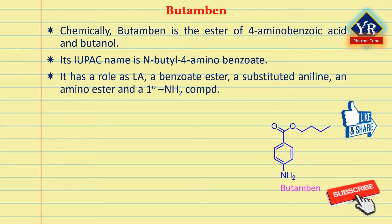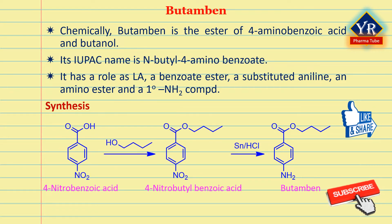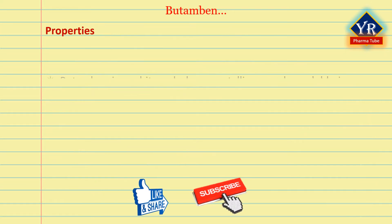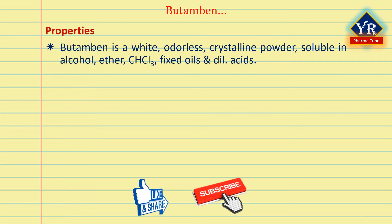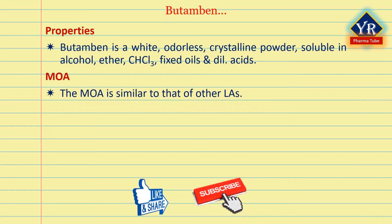Butamben may be synthesized from 4-nitrobenzoic acid, which is esterified with n-butanol to form 4-nitrobutyl benzoate. The nitro group of this compound is then reduced to an amino group using tin and hydrochloric acid to give butamben. Butamben is a white odorless crystalline powder that is mildly soluble in water and soluble in alcohol, ether, chloroform, fixed oils, and dilute acids. It slowly hydrolyzes when boiled with water.